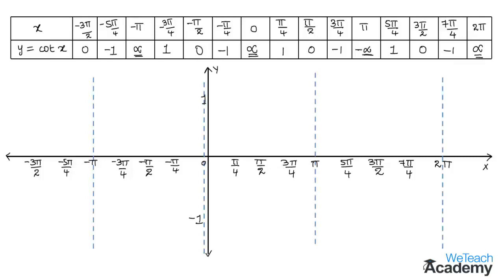Let us plot the points. For x = −3π/2, y = 0: a point on the x-axis. For (−5π/4, −1): a point where −5π/4 and −1 intersect. At x = −π we have already drawn an asymptote line. For (−3π/4, 1): a point where −3π/4 and 1 intersect. For (−π/2, 0): a point on the x-axis. For (−π/4, −1): a point is plotted. At x = 0, the value is infinity, so an asymptote line is already drawn.